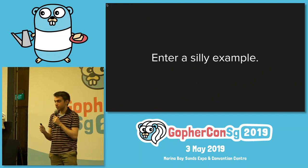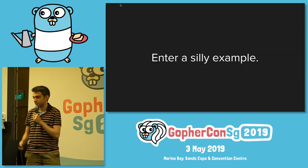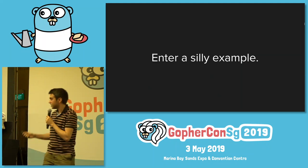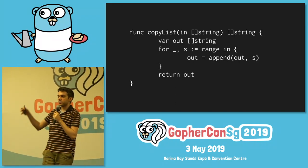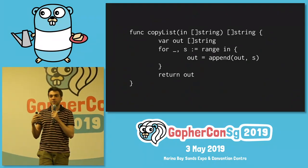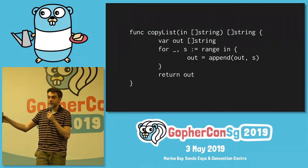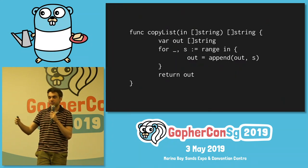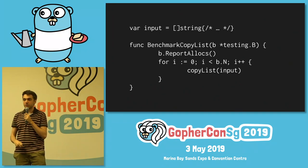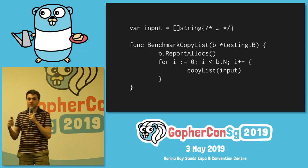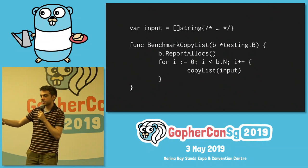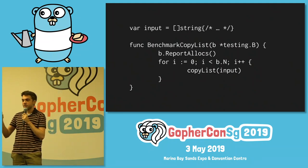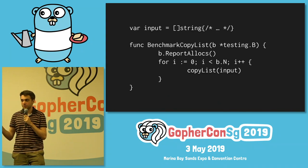So enter a silly example. We've got a function that takes a slice of strings and you want to copy it. The simplest implementation you can think of is just creating a new list, and then appending to that list all the previous elements, and then returning that. And we can write a simple benchmark for that — writing a benchmark in Go is as simple as writing a function like this: you just run that function with some input, and you also want to report the allocations for it.